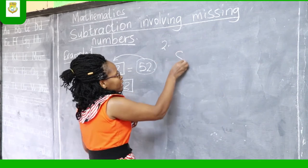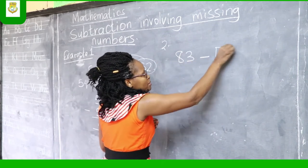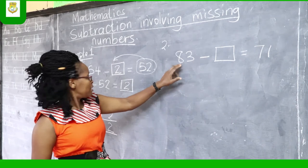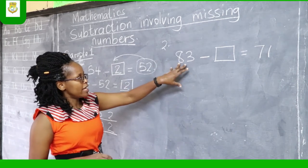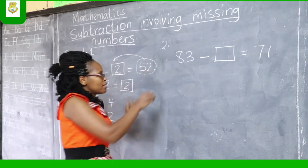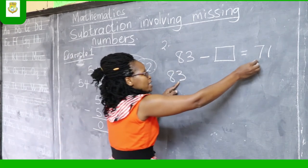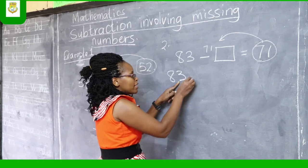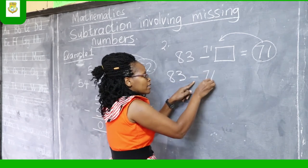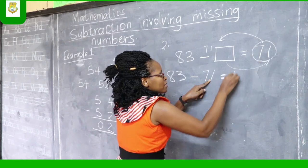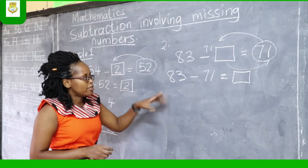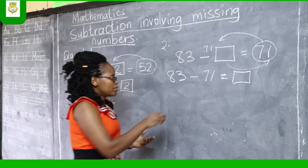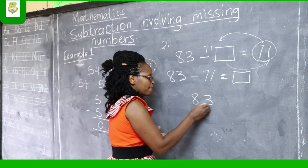Example 2: Let's take 83 take away box to give us 71. Here we have a bigger number compared to what we had initially. 83 take away box equals 71. This can be rewritten as 83 take away 71 equals box. We carry the 71 using an arrow to this side, so we have 83 take away 71 equals box. Using place value columns, we write 83 and 71 with a minus sign.